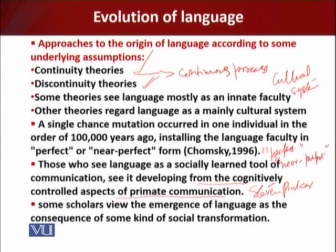Objecting to the sudden mutation idea, these authors argue that even if a chance mutation were to install a language organ in an evolving bipedal primate — that is, animals with two legs — it would be adaptively useless under all known primate social conditions. A very specific social structure must have evolved before language, to make reliance on a singular word or words an evolutionarily stable strategy.